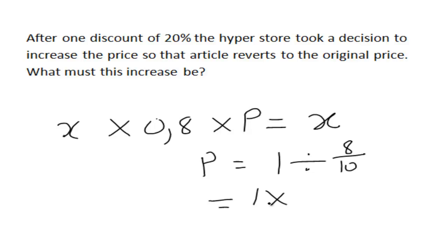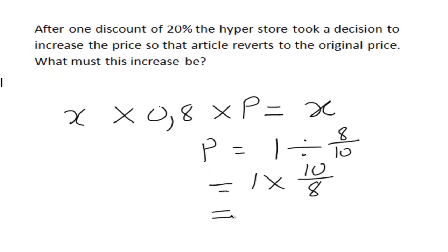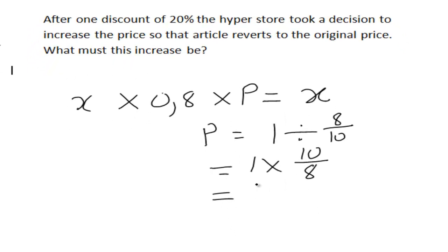And that is the same as 1 times 10 divided by 8, which is 1.25. So in other words, it must be multiplied by 125%, or the price must be increased by 25%.